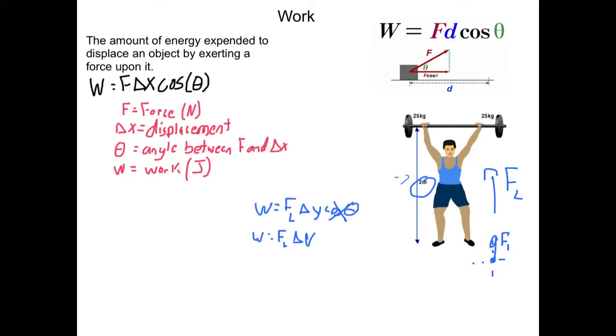So sum of the forces equals ma. A here would be zero. So FL minus Fg equals zero, a.k.a. the force that the guy has to lift up is equal to gravity, assuming that he's doing it at constant velocity.